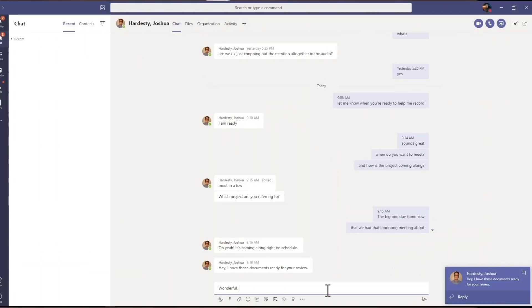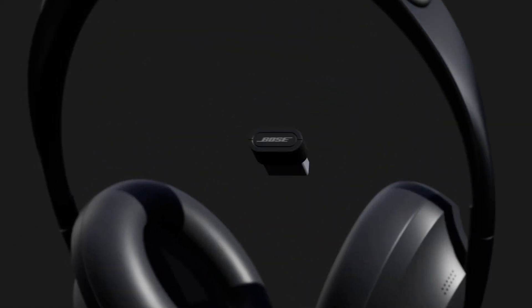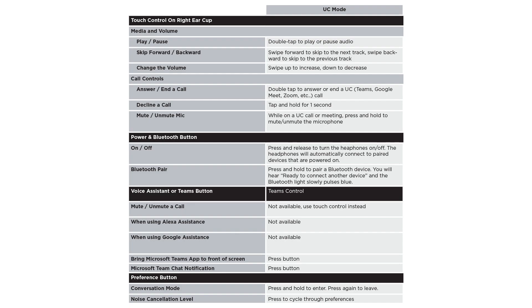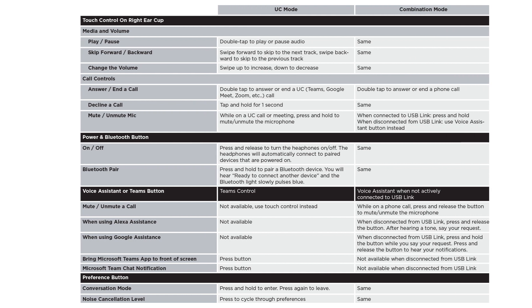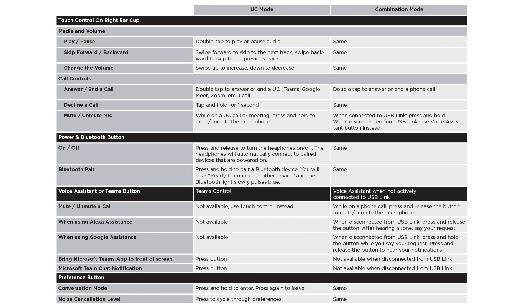This concludes how to use the controls when the Bose Noise Cancelling Headphones 700UC are in their default UC mode. Here is a chart showing the controls. There is more great news to share: the Bose Headphones 700UC can operate in combination mode when enabled in the Bose Music app.